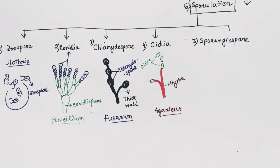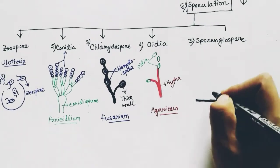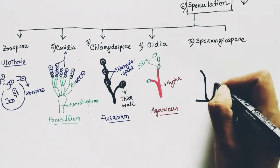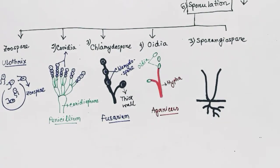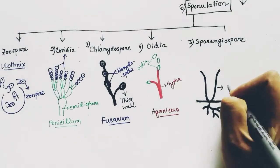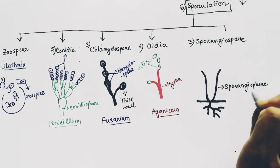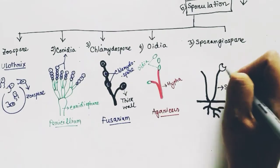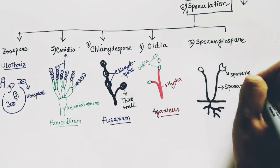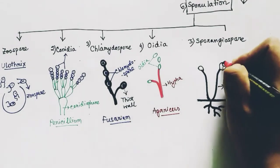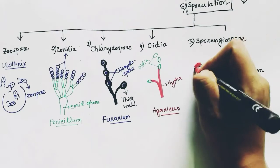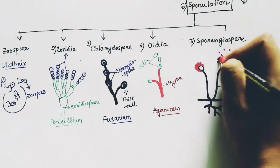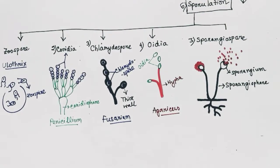The fifth type of spore is sporangiospore. In this type, a sac-like structure called the sporangium is present to store the spores. The sporangium contains the spores, which are called sporangiospores. These spores can be found in Rhizopus and Mucor. This covers all the content about asexual reproduction.